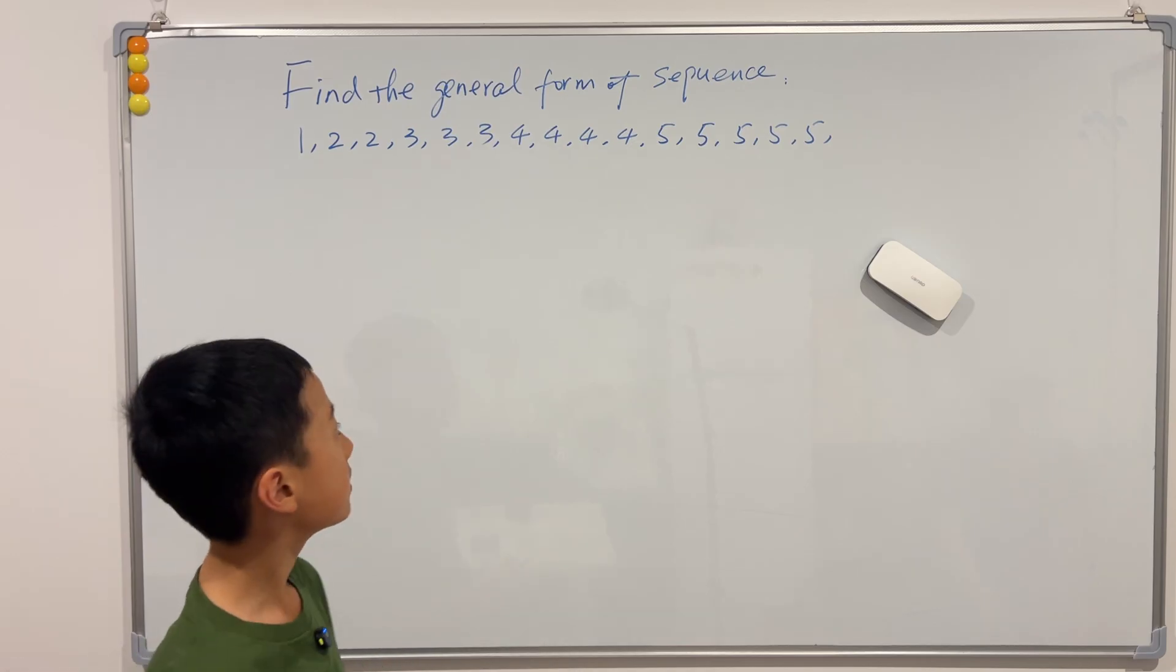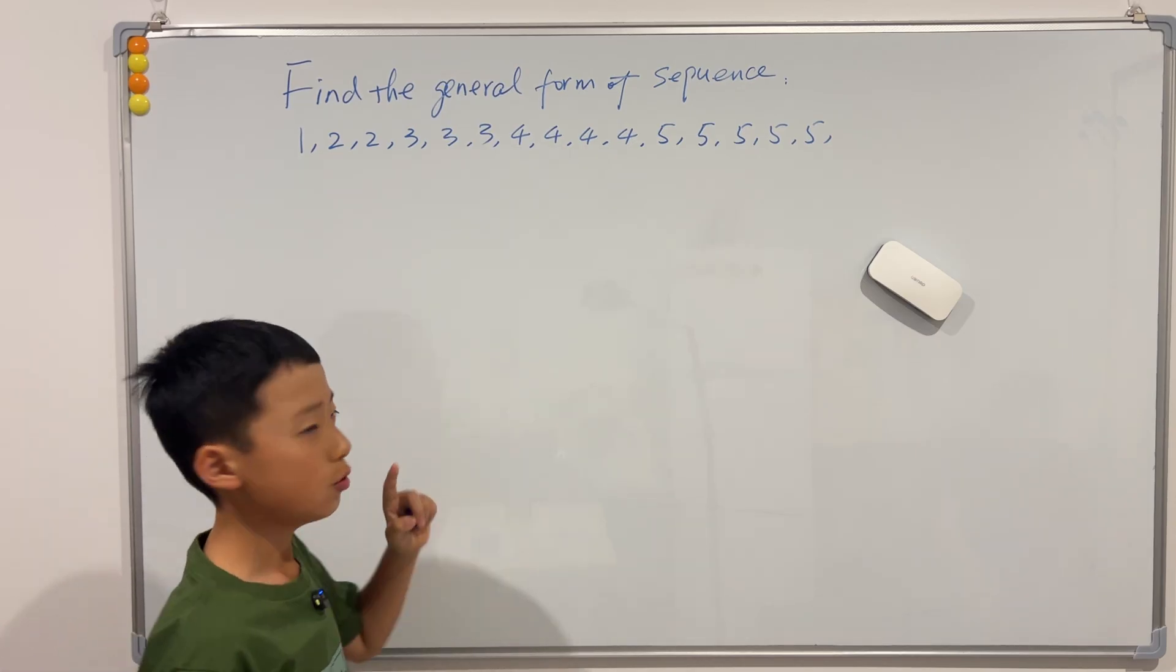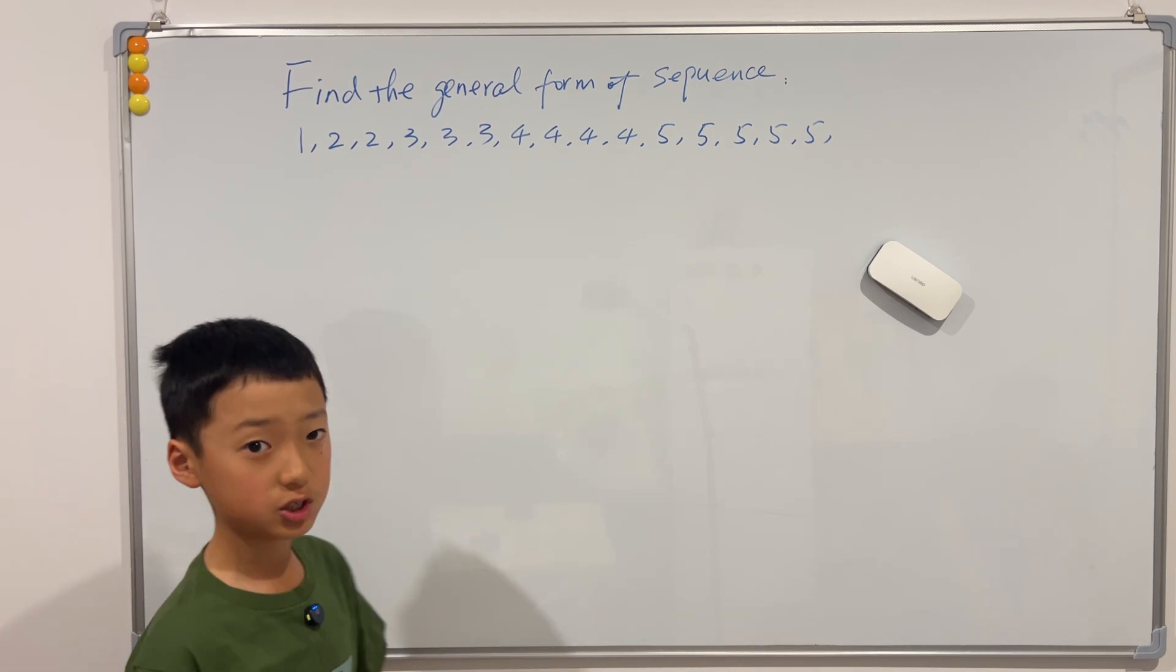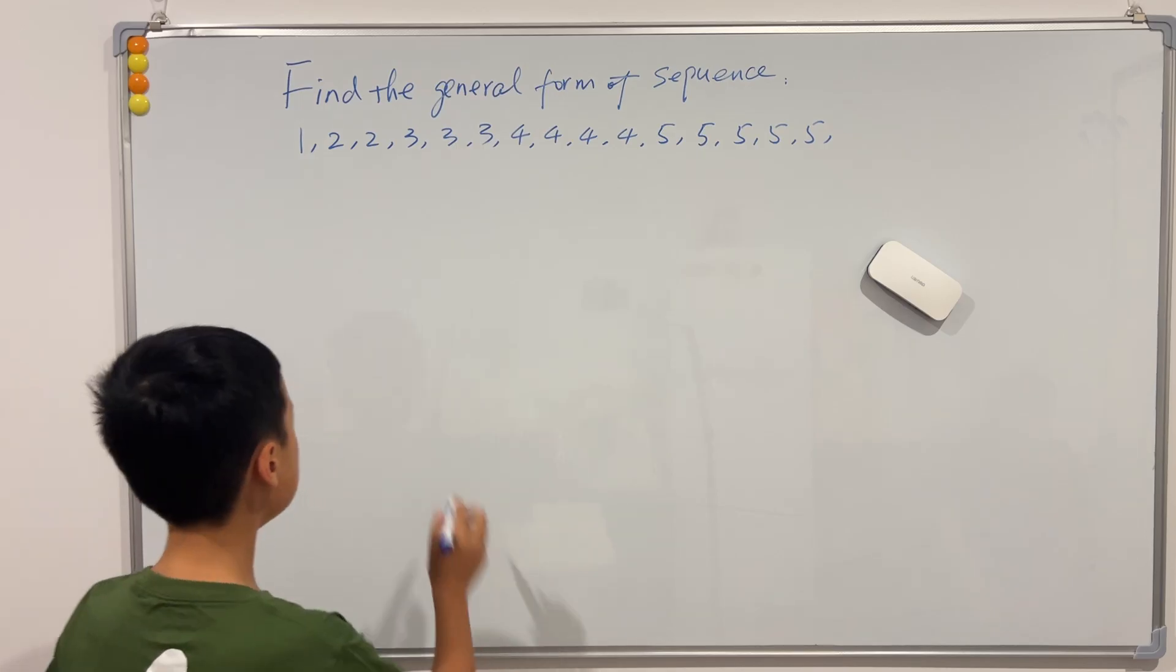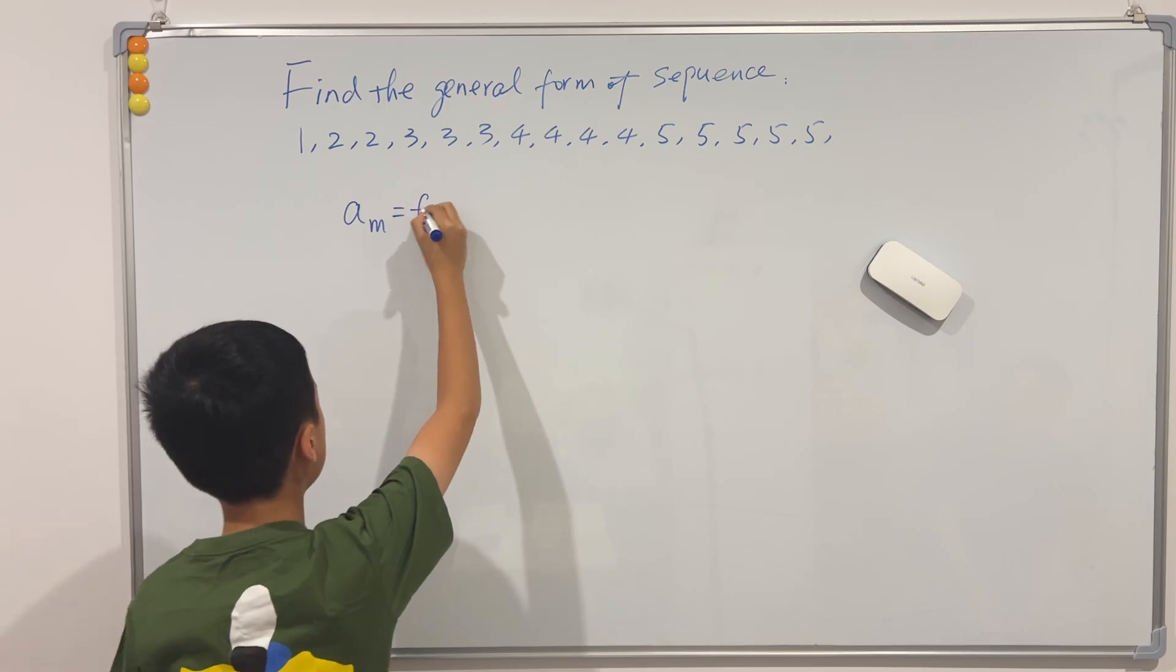Well, to do that we need to connect the number with its position. So if we have a position m, then we want to write a_m in terms of a function of m. This is what we want.